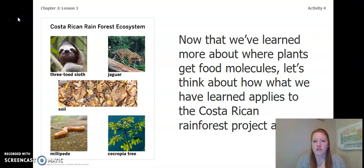So now that we've learned more about where plants get food molecules, let's think about how what we have learned applies to the Costa Rican Rainforest project area. Looking over here at our image, we have our Costa Rican Rainforest ecosystem. We have three-toed sloth, we have jaguars, soil, millipedes, and cercopia trees.